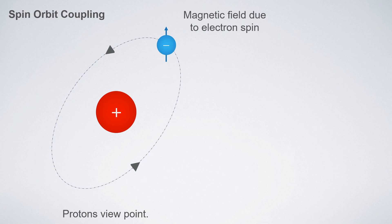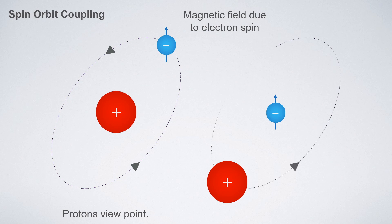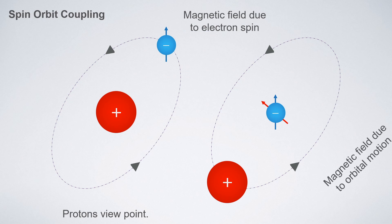As the electron is also revolving around the nucleus, this angular motion also produces a magnetic field. We can try to see this orbital motion in an alternate point of view where the nucleus is moving around the electron — it's the same thing but a different perspective. This motion of the charged nucleus creates another magnetic field, shown with the red line.